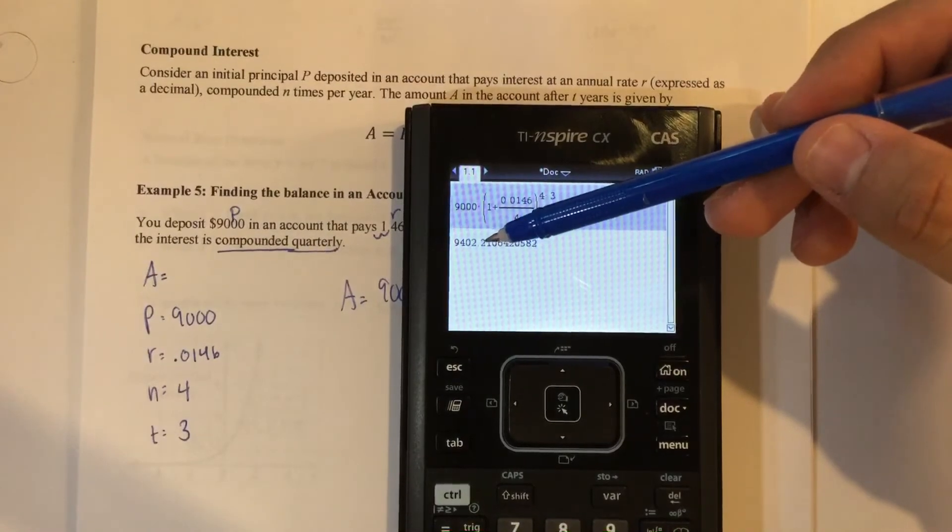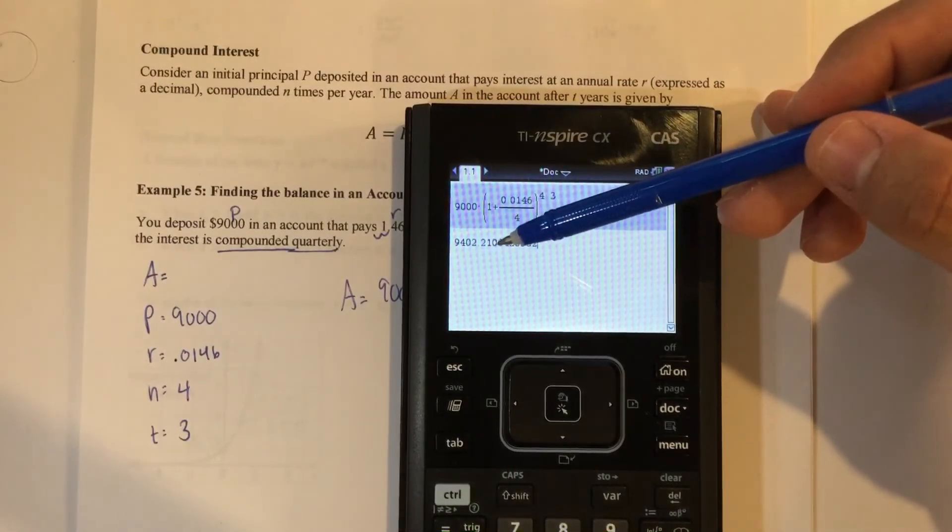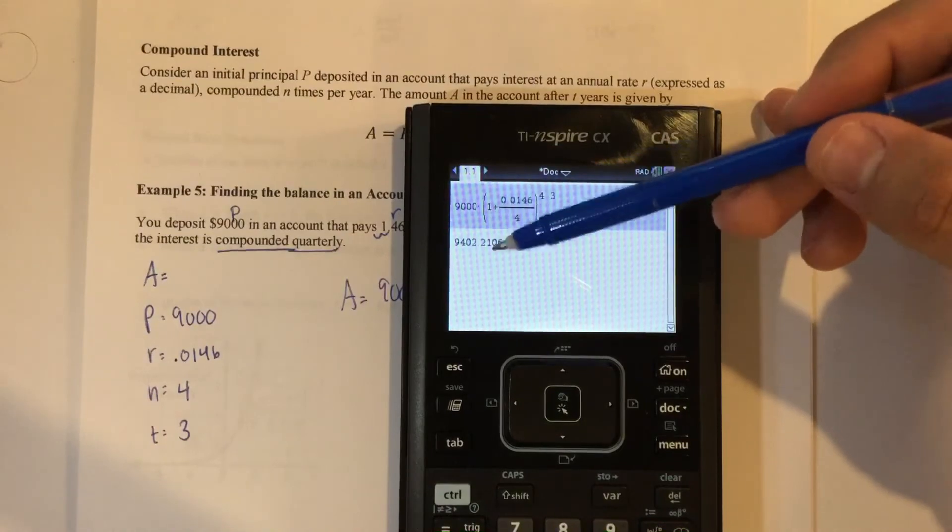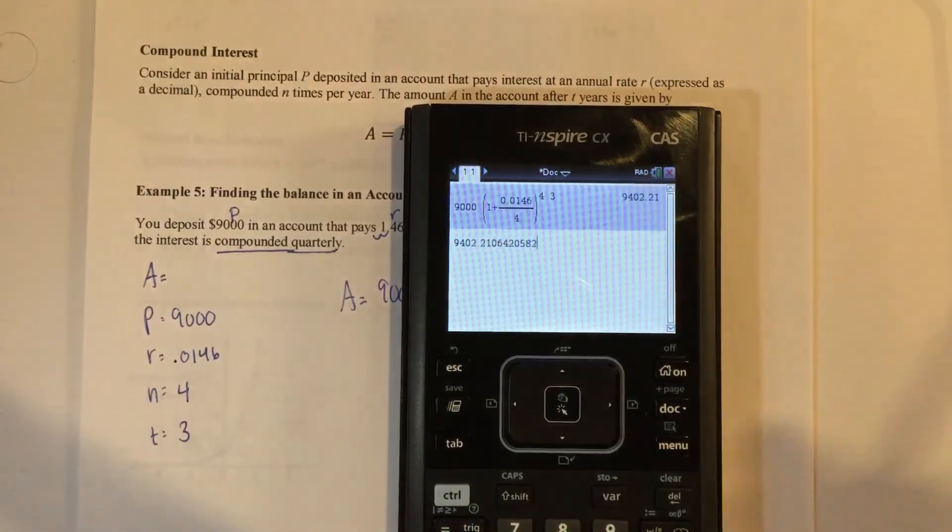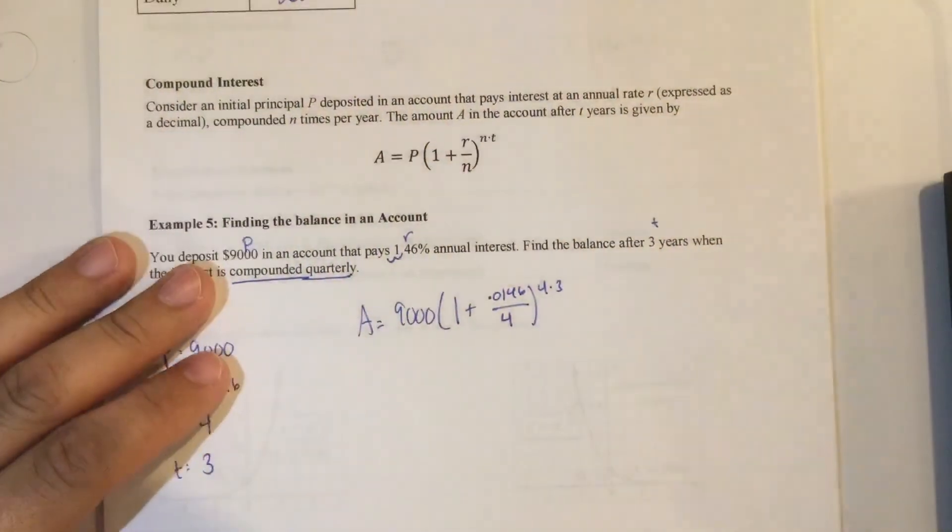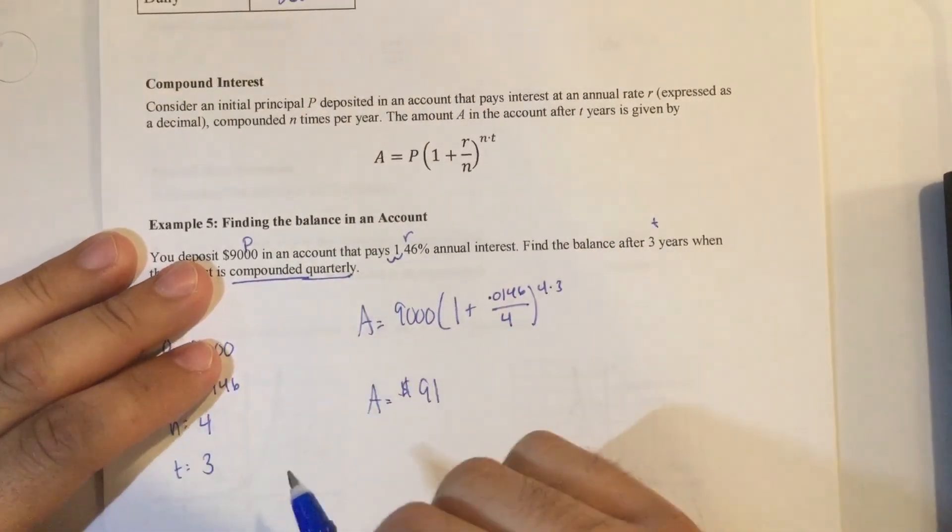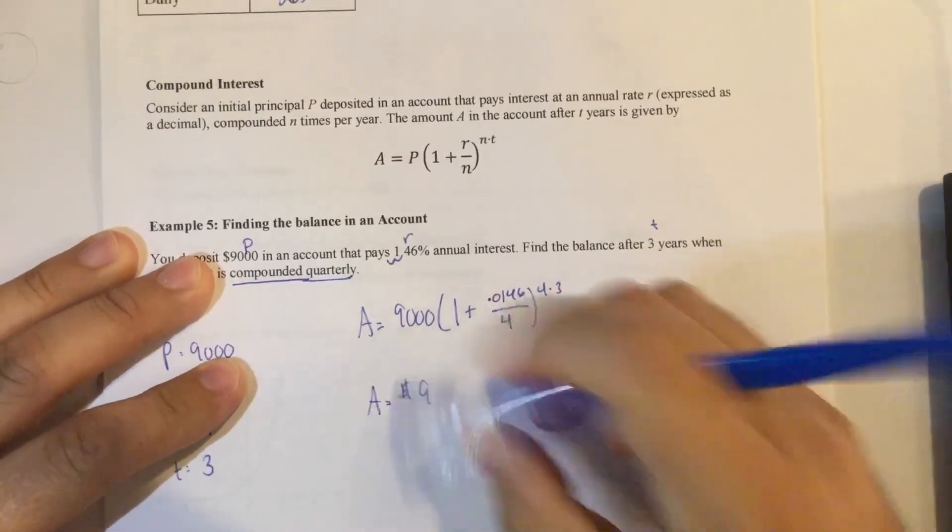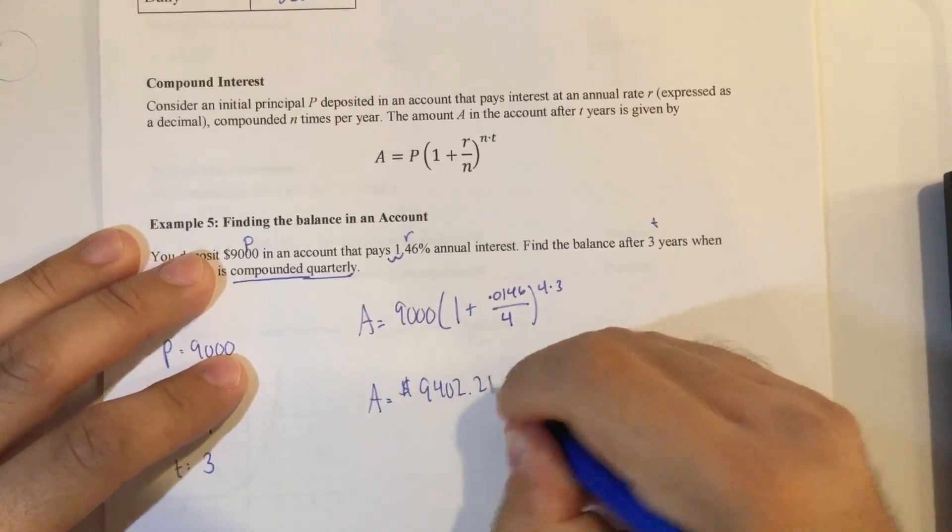So 9,402 point—we round money to two decimal places. So 21, we look at the number after, which is a zero. Four and under, the number stays the way it is. So that one doesn't change. But if this was five or higher, then that one would go up. This case is a zero, so it's $9,402.21.